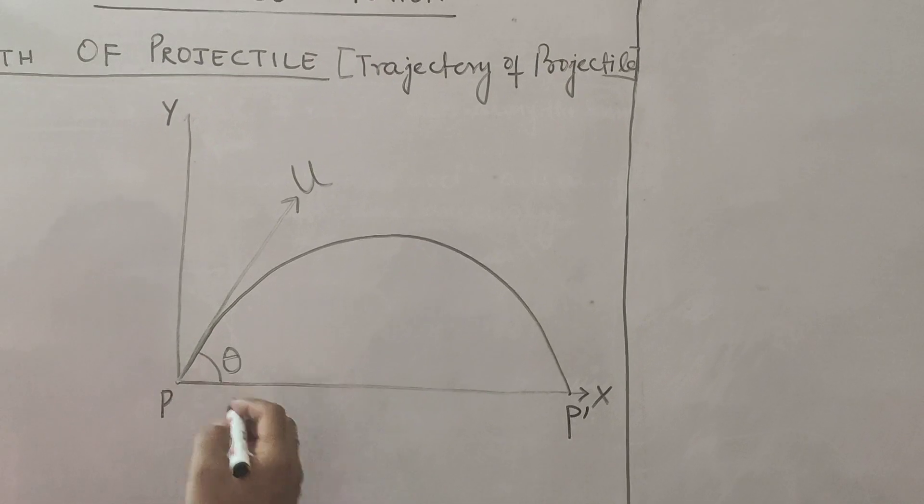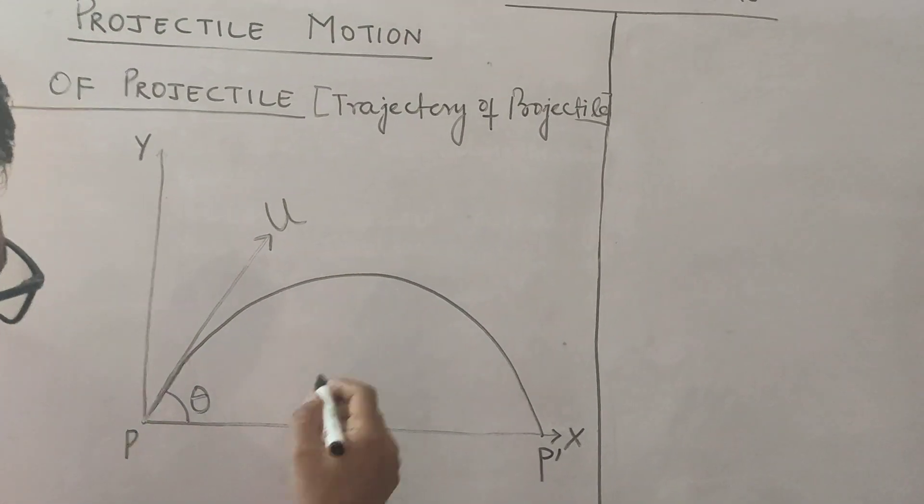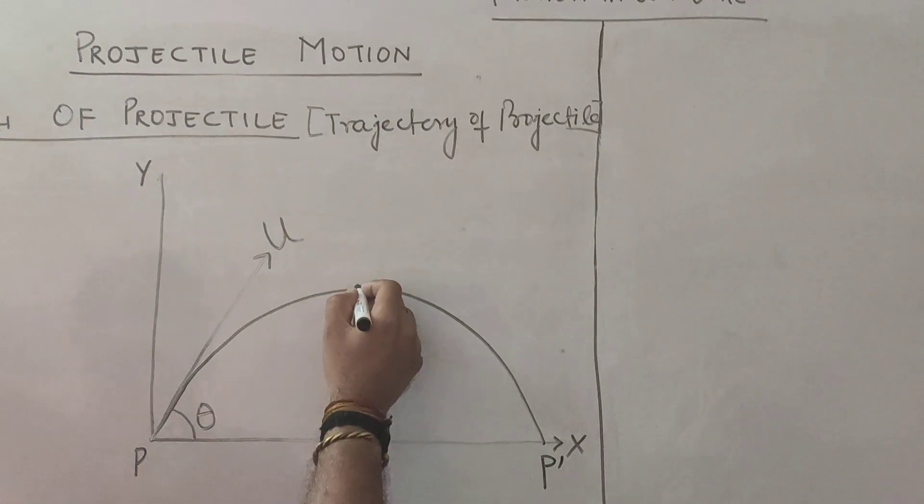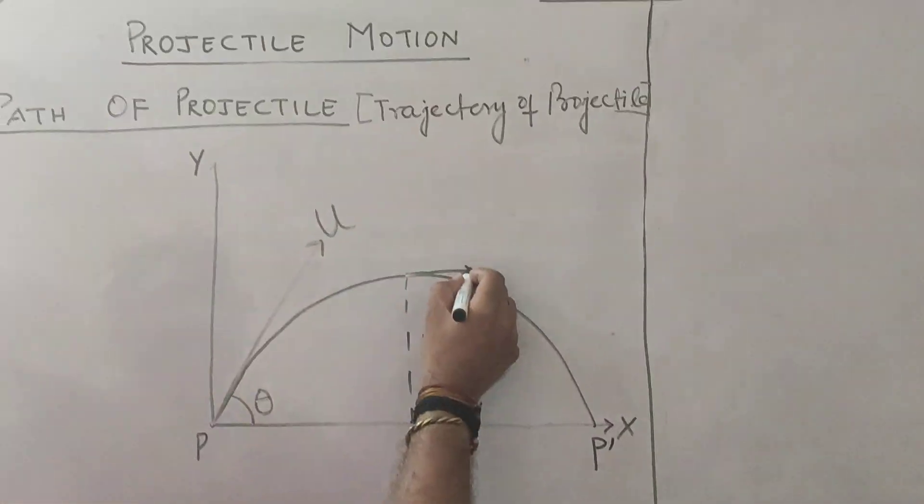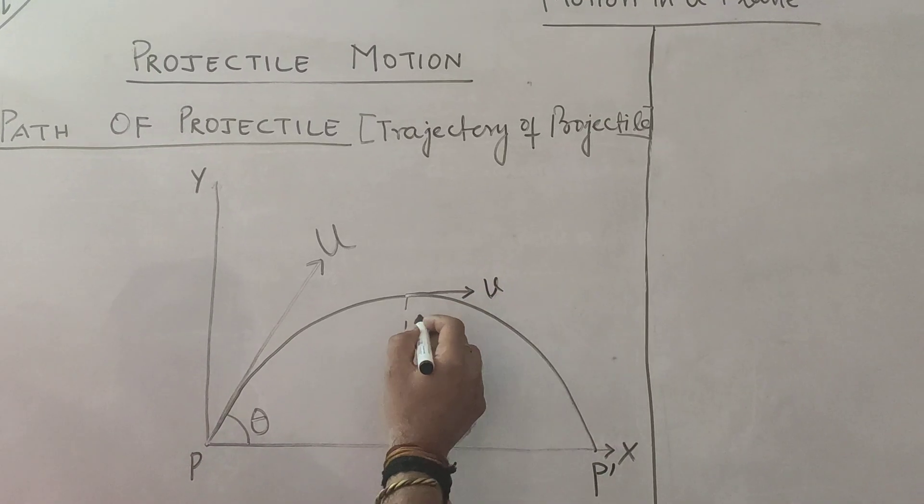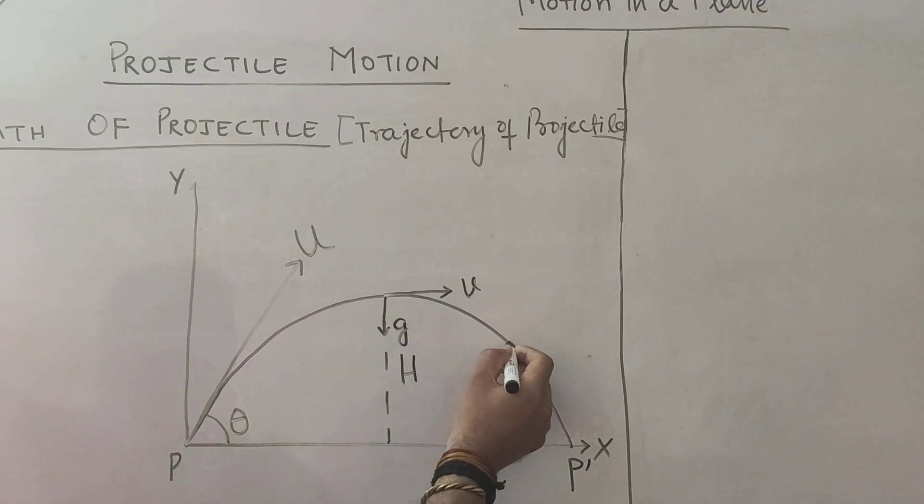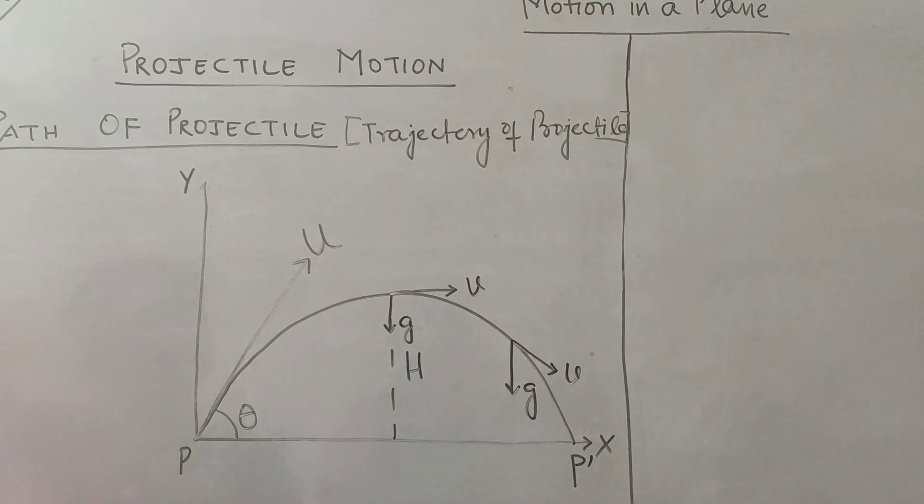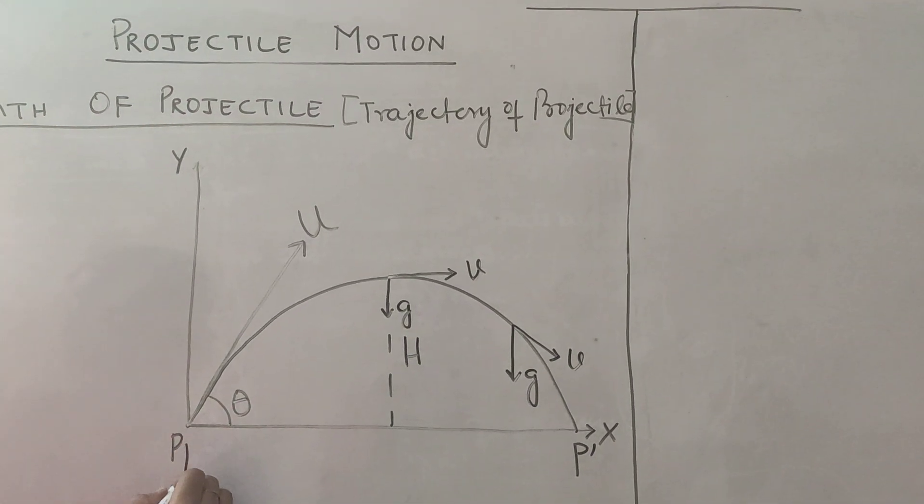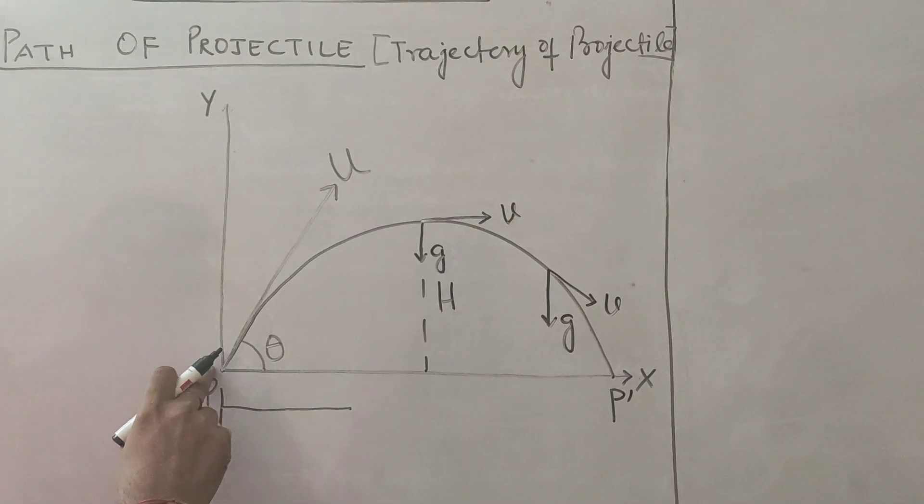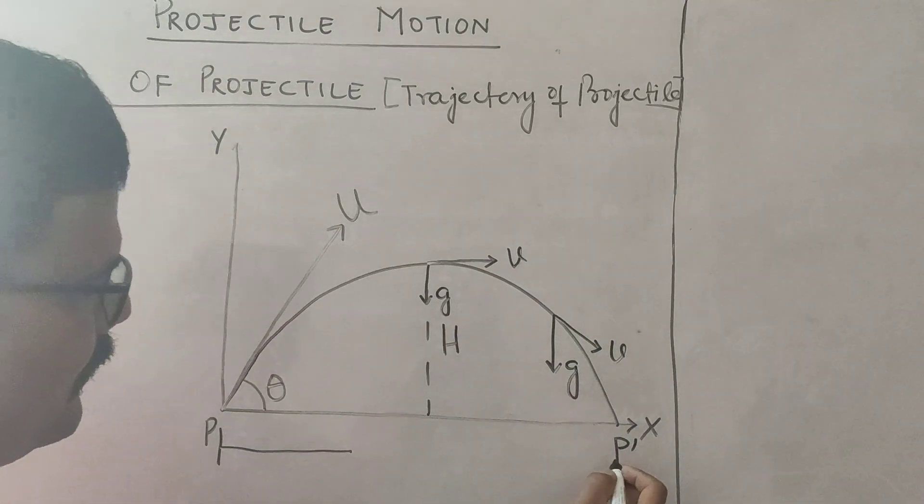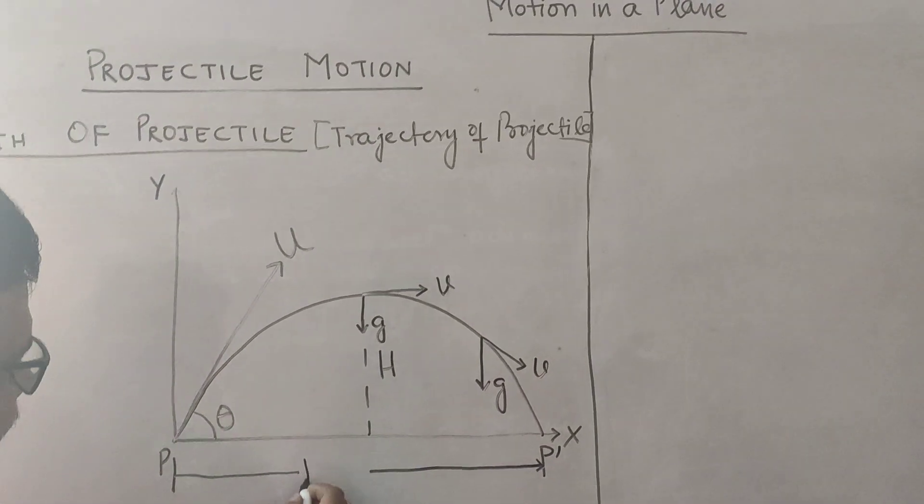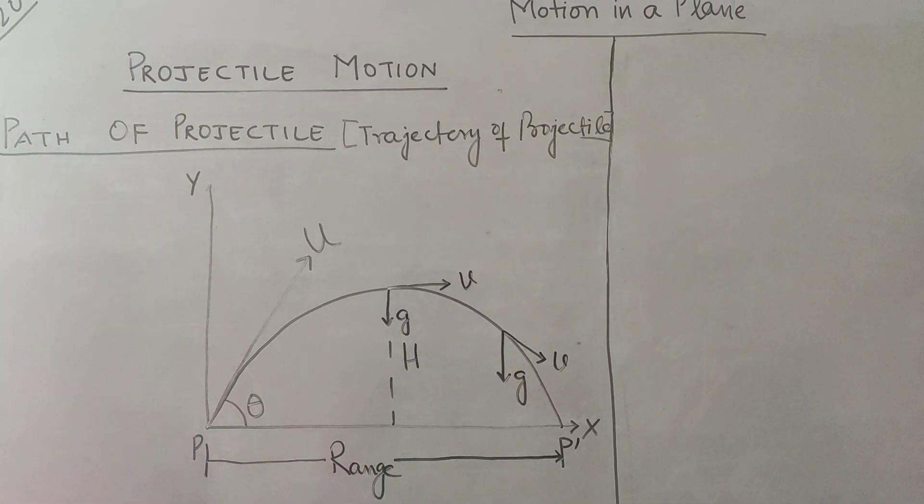This is P dash. This is the height. You can see that velocity is always directed tangentially because it is velocity vector. Acceleration due to gravity is acting downward, velocity, and the distance covered along x-axis. You are throwing from this point of projection, it is falling at this point. So, distance from the point of projection at the point at which the object falls is known as range. I will denote it by R.